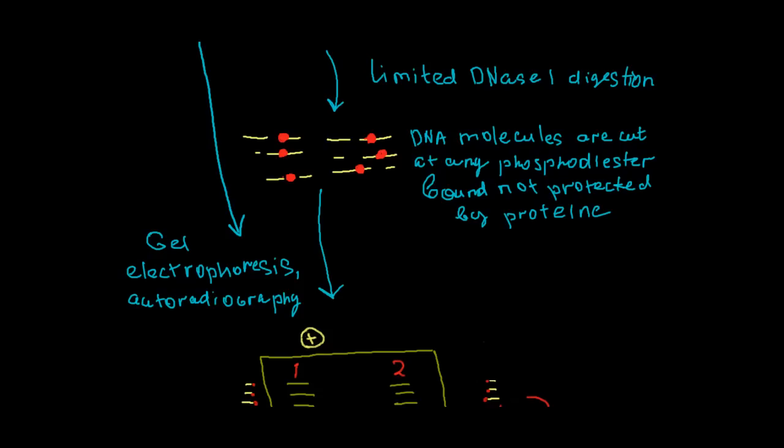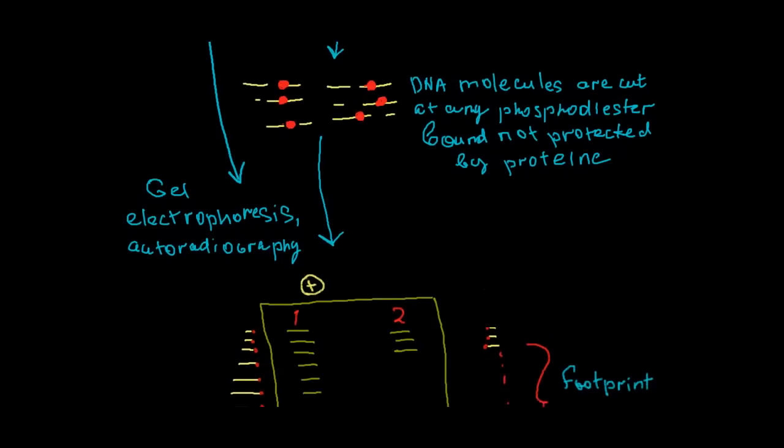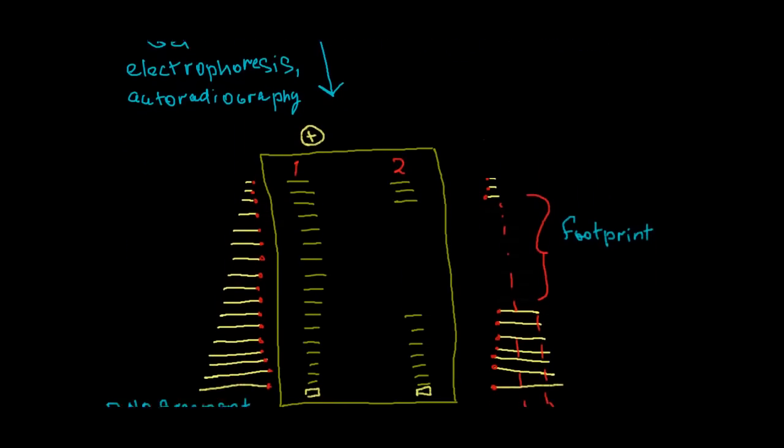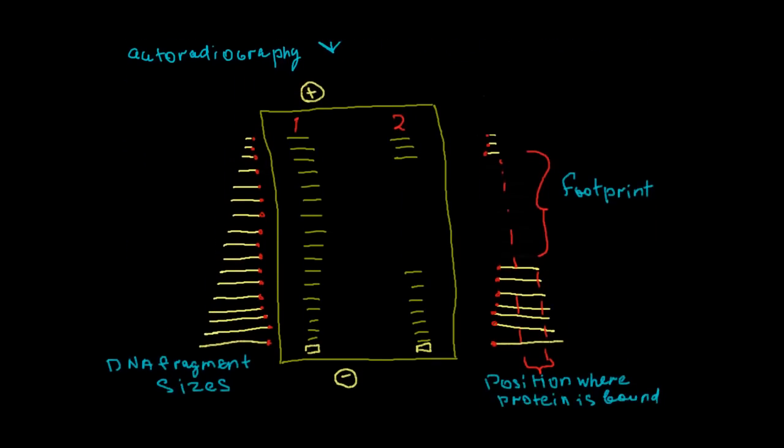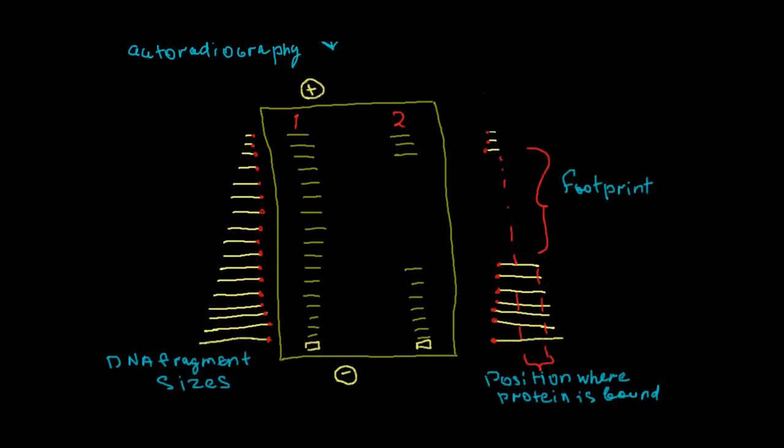We will use in the next step gel electrophoresis or autoradiography because we are using radioactive markers. In our gel retardation method we also use gel electrophoresis. Actually in this case we are going to use polyacrylamide gel because this gel would give us the possibility to see different fragments that differ from each other by only one nucleotide.